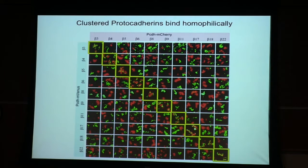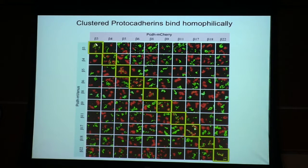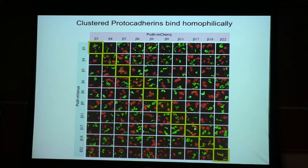Working with Tom Maniatis' lab and postdoc Etude Chan, we first studied the binding properties of these proteins. These are cells expressing different protocadherins — red and green fluorescing cells. Looking at the diagonal, you see that all the cells aggregate together, which means these are homophilic proteins. Beta-4 to beta-4, you see mixed aggregates; any other combination, they don't bind — they form separate aggregates. So we're using cell aggregation as a probe of binding. As is true for Drosophila, these are completely homophilic proteins. They don't bind heterophilically.